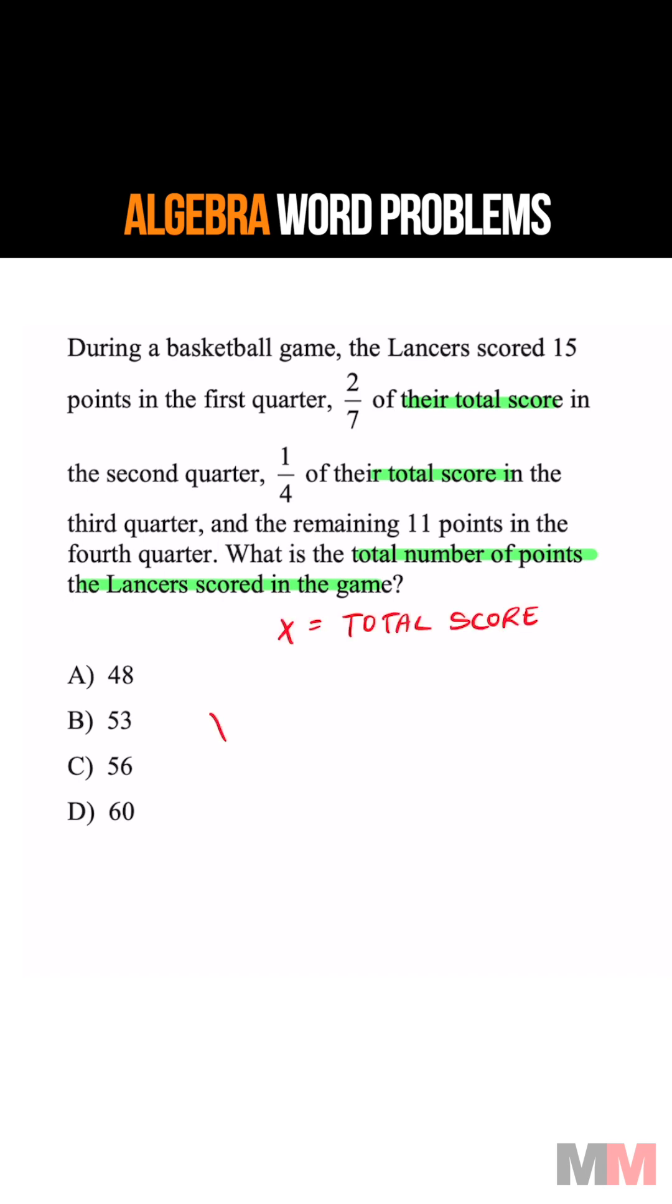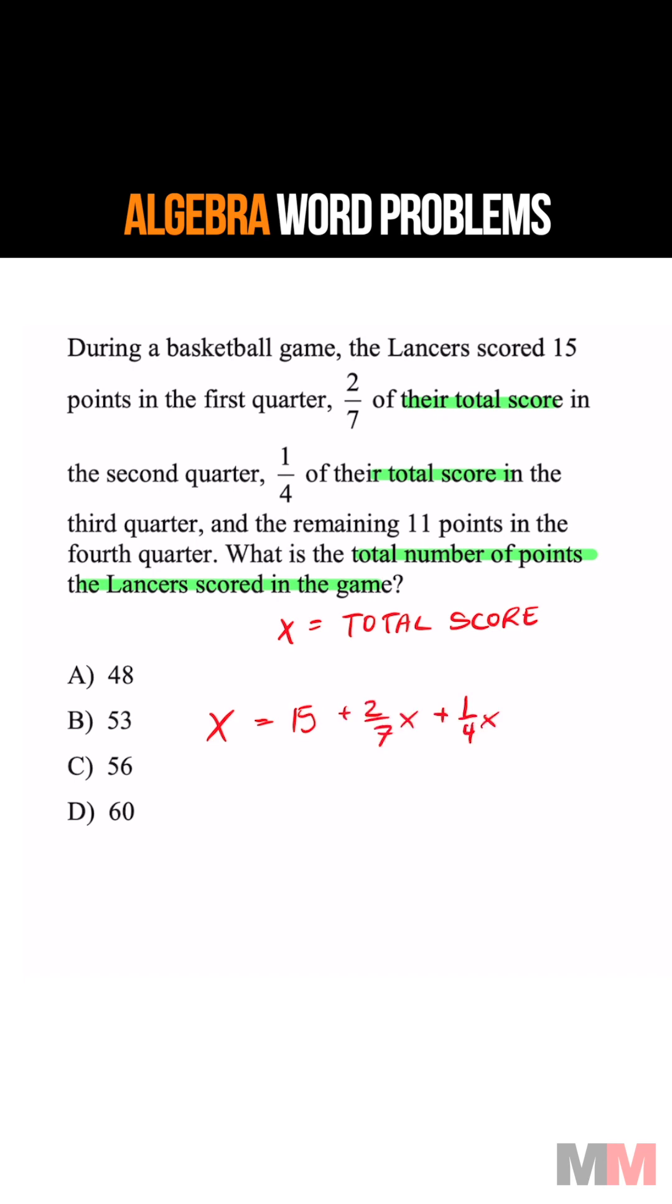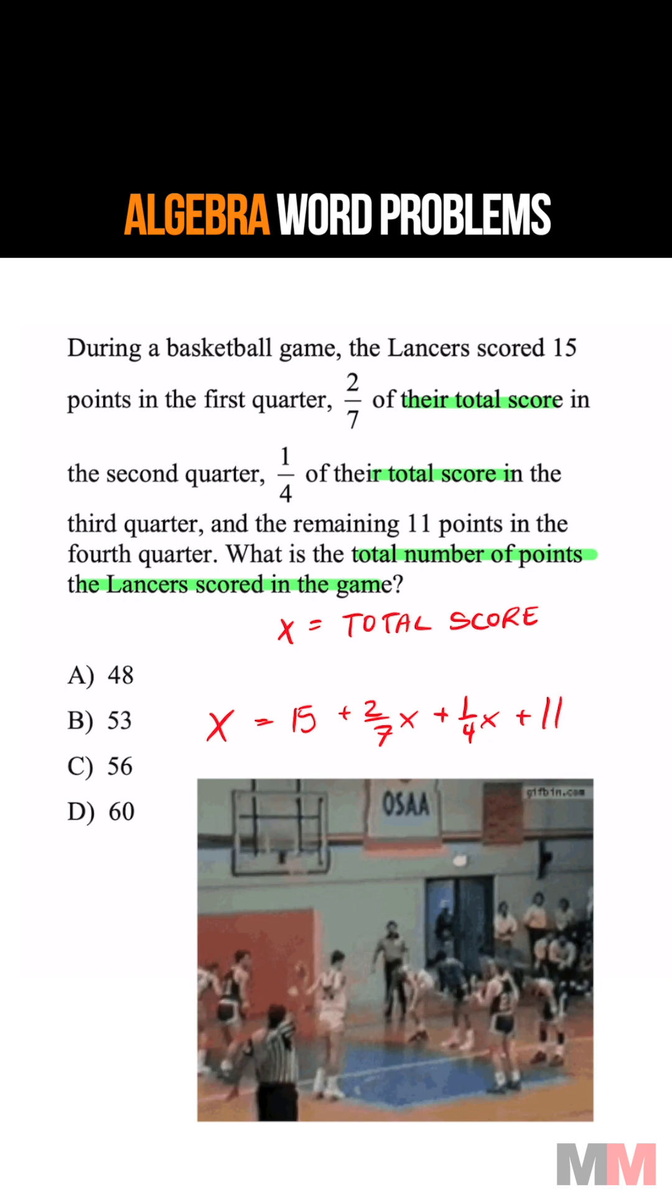So their total score, X, is composed of 15 points in the first quarter, two-sevenths of their total score in the second quarter, a fourth of their score in the third quarter, and they got tired in the fourth quarter with 11 points.